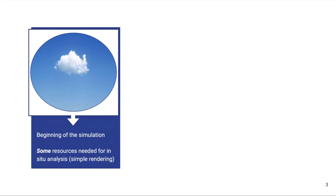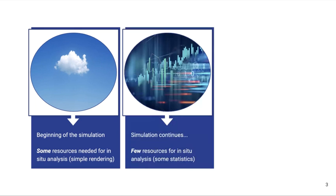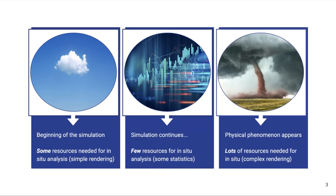In many situations, we begin the simulation and some resources are needed for in-situ analysis — for instance, some simple rendering. Let's imagine we have a climate simulation and we just want to check that everything is all right, we have the correct initial conditions, and then we go for a coffee. While we take our coffee, the simulation continues and we use a few resources for in-situ analytics — basically, we want some statistics to come out. At some point, the statistics tell us something interesting happened, and here we want to grab a lot of resources and do some heavy rendering of the physical phenomenon that appears — for instance, a tornado — and really visualize what's happening with some complex rendering.